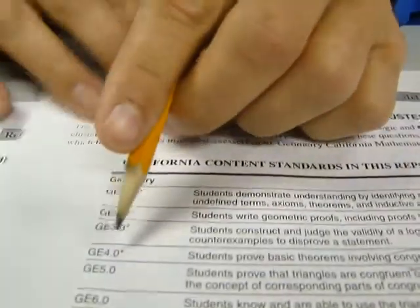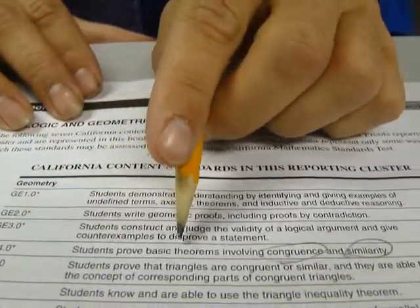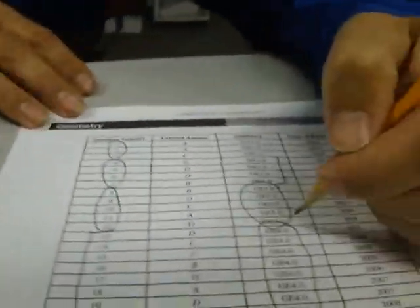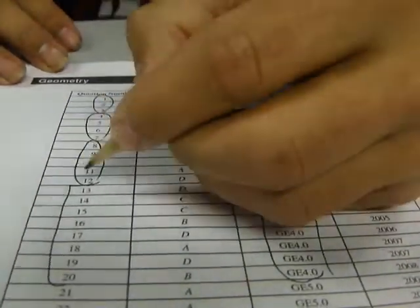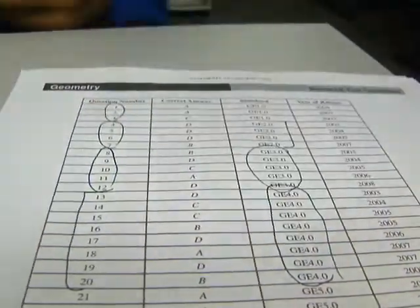Welcome everybody to Standard 4. We're going to be working on Standard 4. Standard 4: students prove basic theorems involving congruence and similarity. As you can see here, Standard 4 is a big one — it goes all the way from problem 13 to problem 20.